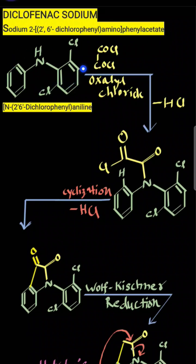This is the starting material, and the name of the starting material is N-(2,6-dichlorophenyl)aniline. This is your aniline part, in which one of the hydrogens is substituted with a 2,6-dichlorophenyl group. It is reacting with oxalyl chloride, ClCO-COCl.